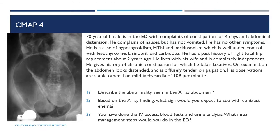The abdominal X-ray shows a dilated loop of large bowel in a coffee bean shape, likely representing sigmoid volvulus. A right hip implant is also seen. Based on this X-ray finding, if the patient proceeds to contrast imaging, you would expect to see a bird beak sign.